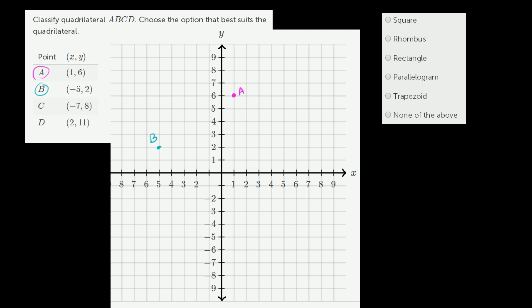Point C is at some carbonated water, so some errors coming up. Point C is at negative 7 comma 8. Negative 7 comma 8. So that is point C right over there.